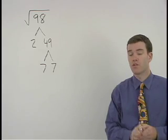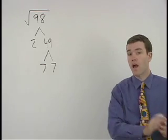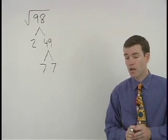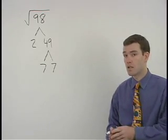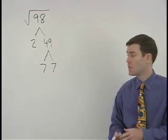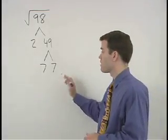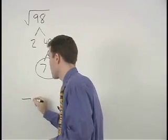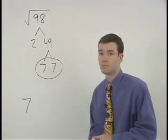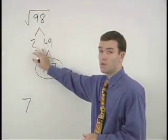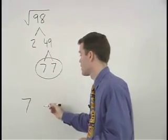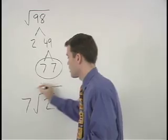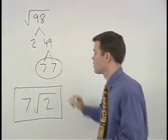If a factor pairs up then it will come out of the radical. If a factor does not pair up then it stays inside the radical. So here since our 7's pair up, a 7 will come out of the radical. Since the 2 does not pair up it stays inside the radical. And our answer is 7 root 2.